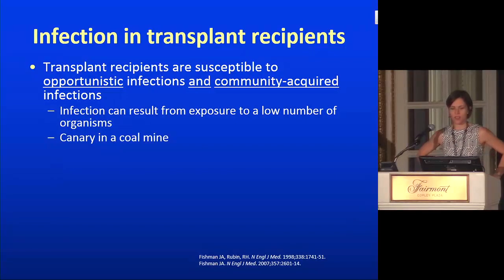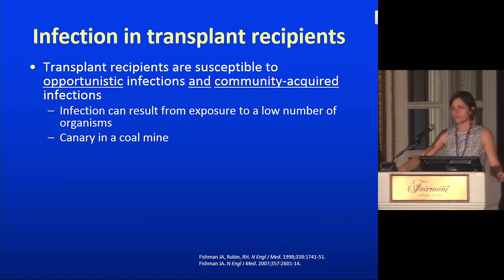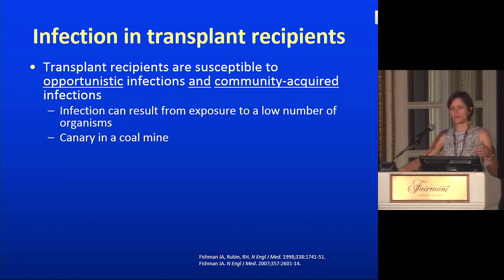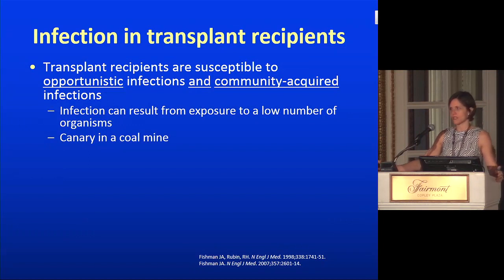So, basic principles. Infection in transplant recipients — you have to remember they're vulnerable to both opportunistic infections and community-acquired infections. You have to think in two arms when considering what potential pathogens they could have. Also remember that infection can result from exposure to a relatively low number of organisms. A renal transplant patient who eats at a restaurant with salmonella contamination doesn't have to eat very much to get sick.